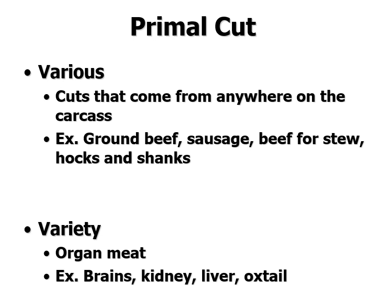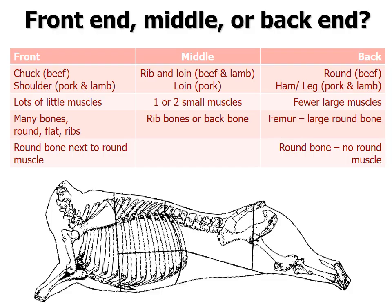There are also cuts not specific to any one species. Various cuts can come from anywhere on the carcass — things like ground beef, sausage, beef for stew, hocks, and shanks. Variety cuts are organ meats like brains, kidney, liver, heart, and oxtail. Don't confuse 'various' and 'variety' — various cuts come from various places on the carcass, and variety cuts are your organ meats.